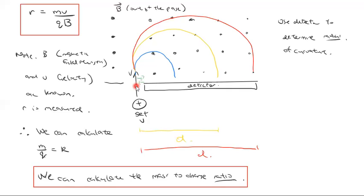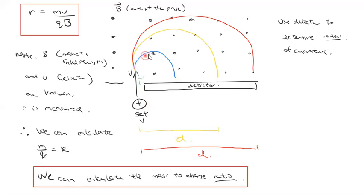The radius simply represents the mass-to-charge ratio of whatever you're sending through. We send in our sample, make it undergo circular motion, and detect where it lands. By knowing where it lands, we know R, and because we know V and B, we work out the mass-to-charge ratio. Each landing position corresponds to a particular mass-to-charge ratio. So the mass spectrometer has separated particles with different mass-to-charge ratios from a mixture.